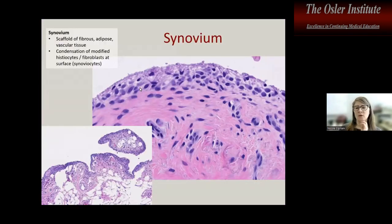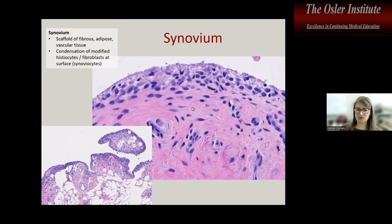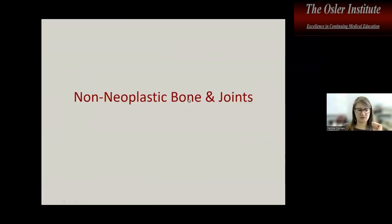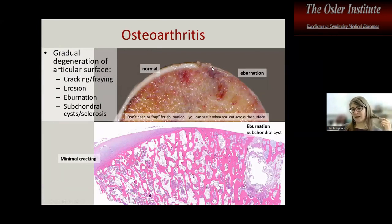Don't forget synovium, which is a scaffold of histiocyte-like cells condensing at the surface with fibrovascular tissue below. This is not a true lining with a basement membrane — it is just a condensation of cells at the surface.